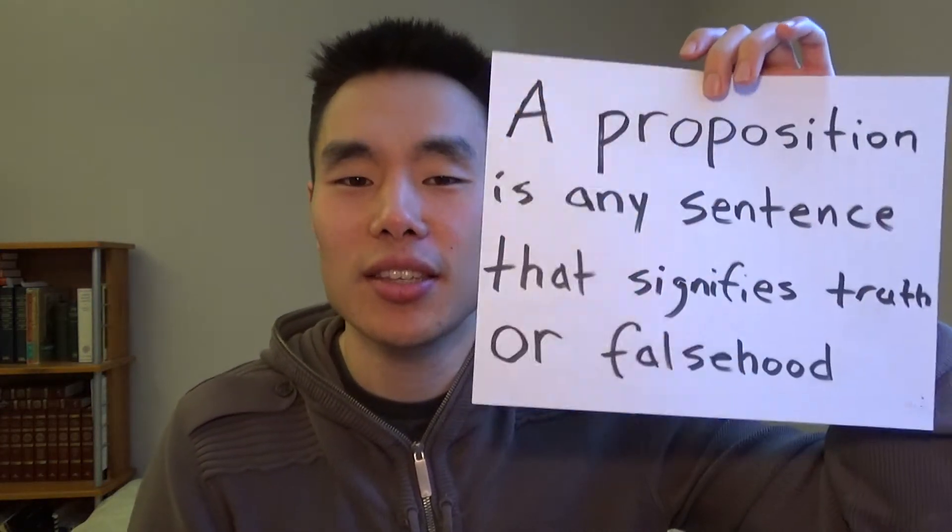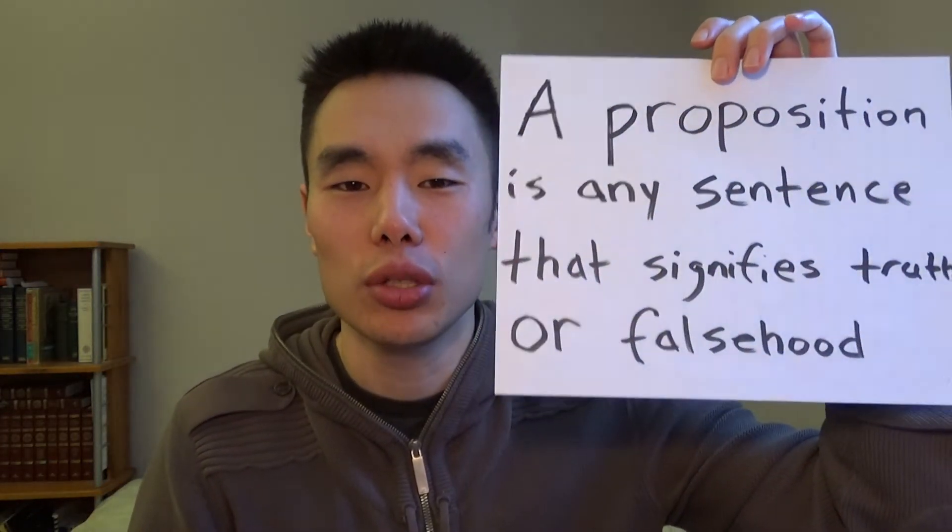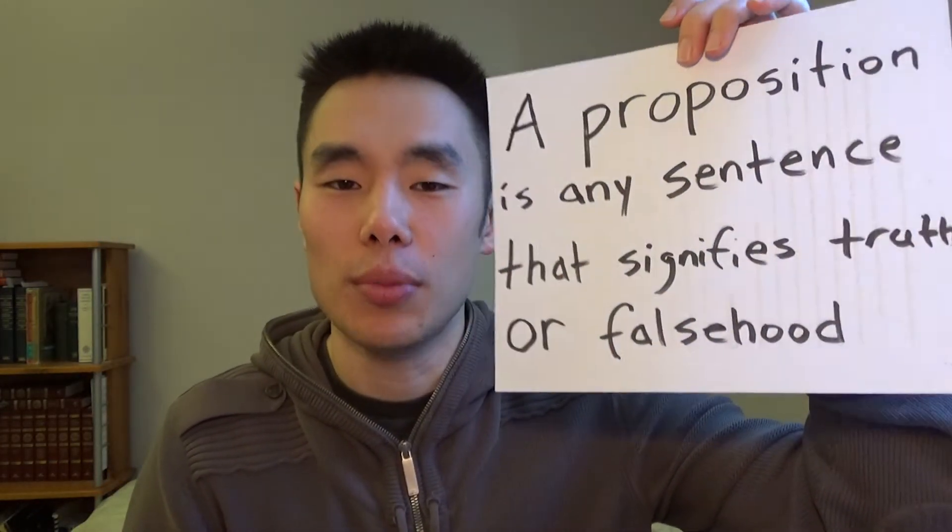There is a more technical definition used by philosophers: a proposition is the content or meaning of a declarative sentence capable of truth or falsity. But we won't be using that one. We'll stick with the easier one, which was given by the 16th century English logician Thomas Wilson. His definition is still pretty good, so we'll be using this one.